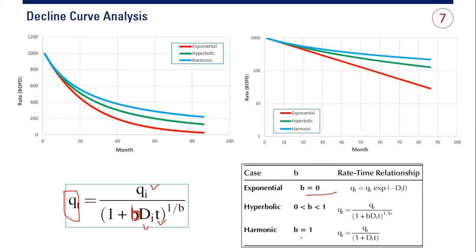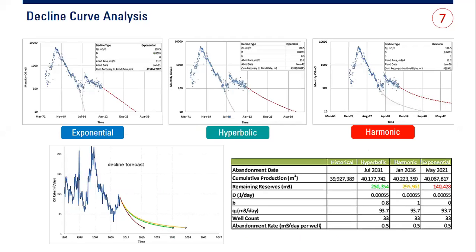At the corporate level, decline curve analysis is often quite difficult — it's hard to distinguish whether we have exponential, hyperbolic, or harmonic. One engineer might say it's exponential, another might say it's hyperbolic, and another might say it's clearly harmonic. We find this condition quite normally in daily life because we are handling something we cannot see — it's the reservoir, with a lot of uncertainties. That's why we usually accommodate all of those possibilities by plotting all three.